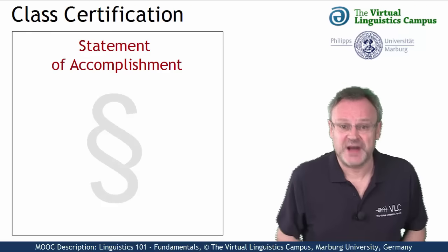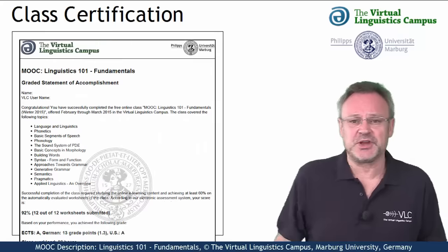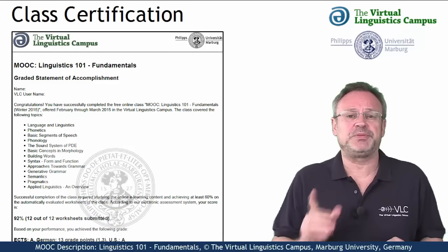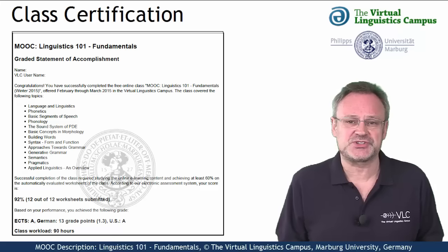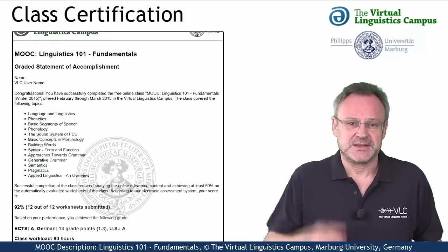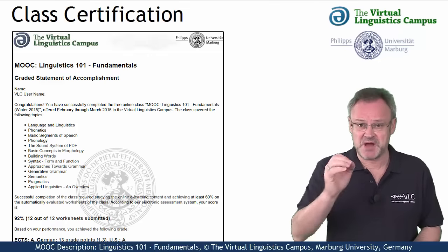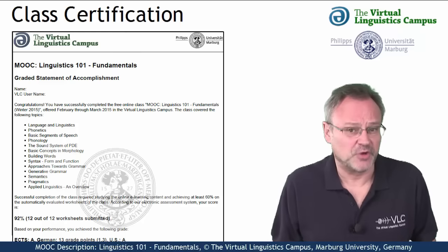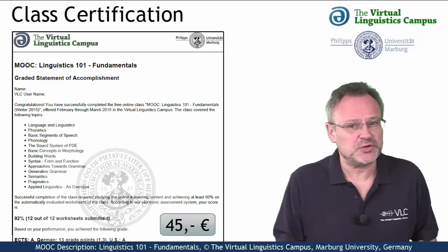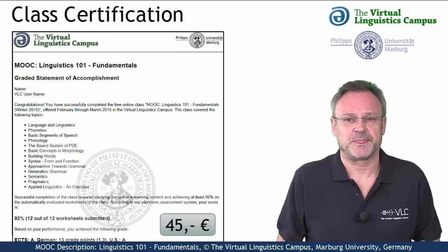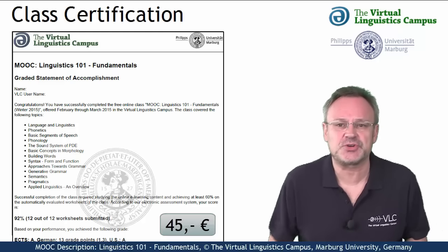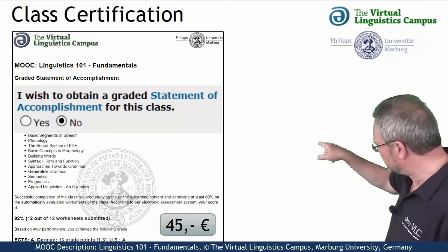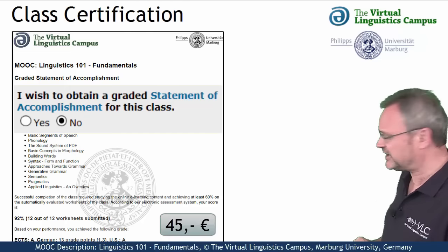The most advanced option is the graded statement of accomplishment, which includes your precise grade, the workload in hours, and a complete list of all the tasks you successfully submitted. This certificate is issued by Marburg University in conjunction with the Virtual Linguistics Campus, and it involves a fee of currently 45 euros. To obtain such a certificate, you have to make your choice on the class start site using this particular option and click to select it.